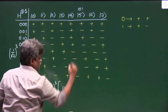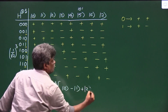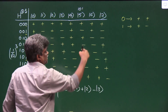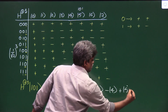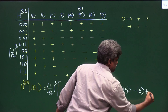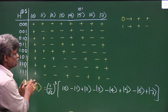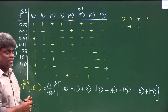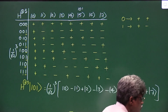So the result of H⊗3 on |101⟩ is (1/√2)³ times the sum: +|0⟩ − |1⟩ + |2⟩ − |3⟩ − |4⟩ + |5⟩ − |6⟩ + |7⟩. This technique allows us to write the linear combination directly without computing the full tensor product. If this trick is useful, please make use of it. Thank you.